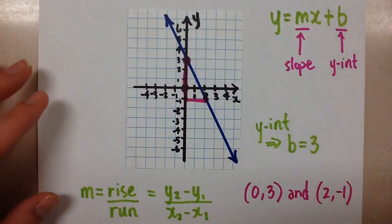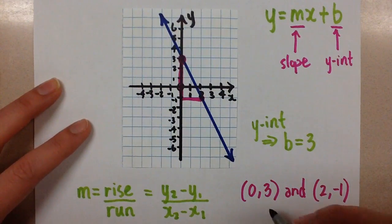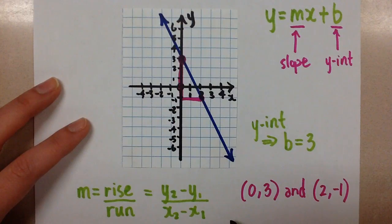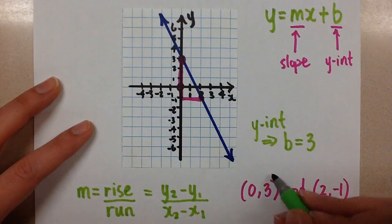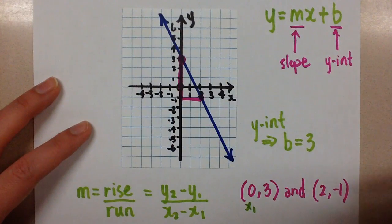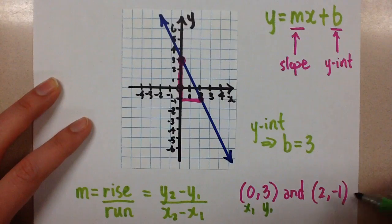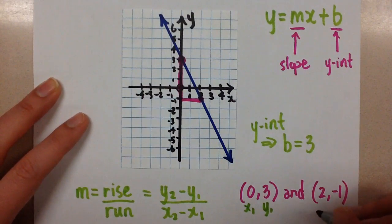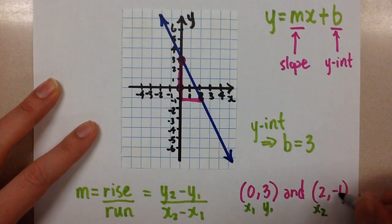So to use this method, we need to label the two points we're going to use with the x1, y1, x2, y2 values. So here I'll say this is my first point, so I'll call this x1 since it's the x-coordinate, and I'll call this y1 since it's the y-coordinate. And then on this point, it'll be my second point. I'll call this x2 since it's the x-coordinate, and this the y2 since it's the y-coordinate.